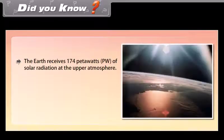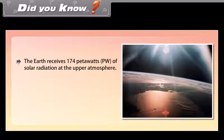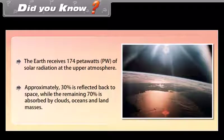Did you know? The earth receives 174 petawatts of solar radiation at the upper atmosphere. Approximately 30% is reflected back to space, while the remaining 70% is absorbed by clouds, oceans, and land masses.